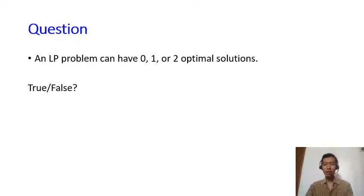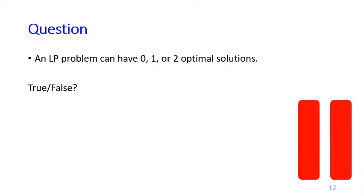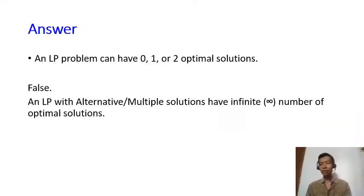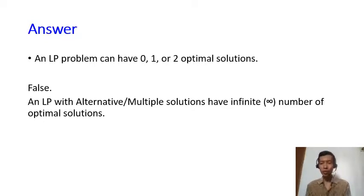Now let me check your understanding. True or false: an LP problem can have zero, one, or two optimal solutions. Pause the video and think about your answer. The answer is false — an LP with alternative or multiple solutions does not just have two optimal solutions; it has an infinite number of optimal solutions.